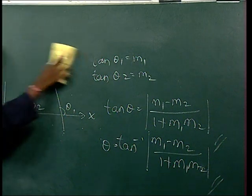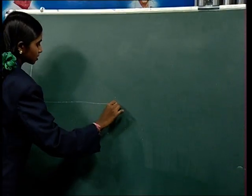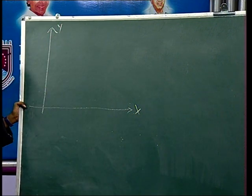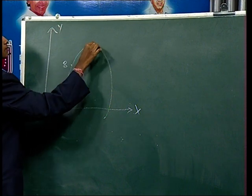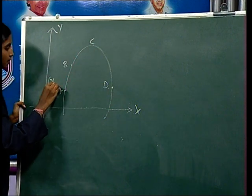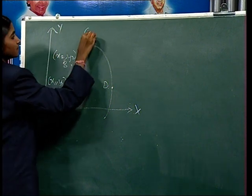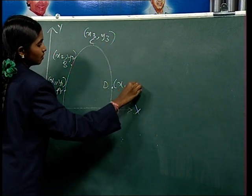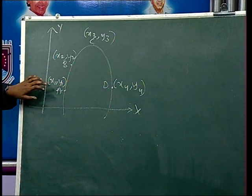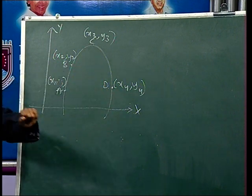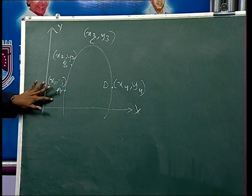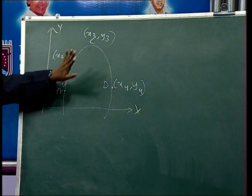Now let us go to slope of a curve. A curve is a continuously bending line without angles. I am drawing a graph of x-axis and y-axis, plotting the points A, B, C, and D with coordinates (x1, y1), (x2, y2), (x3, y3), and (x4, y4). Observe the graph: at point A, the graph is rising more quickly than at point B; at point C, the graph levels off; and at point D, the graph is falling down. This is about the slope of a curve.